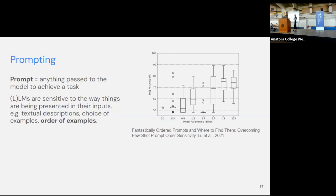Prompting right after pre-training might be problematic because the language model is quite sensitive to small alterations in the input. For example, we could just change the textual description, the choice of samples, or even the order of samples, and suddenly the model works or it doesn't. Even some non-semantic changes affect predictions, and that should obviously not be the case. Here on the top I'm highlighting a paper that points this out.